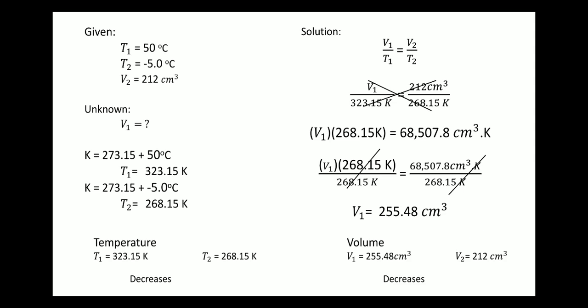Analyzing: T1 decreased from 323.15 Kelvin to 268.15 Kelvin, and volume decreased from 255.48 cm³ to 212 cm³. This follows Charles' Law — as temperature increases, volume also increases, and as temperature decreases, volume also decreases.